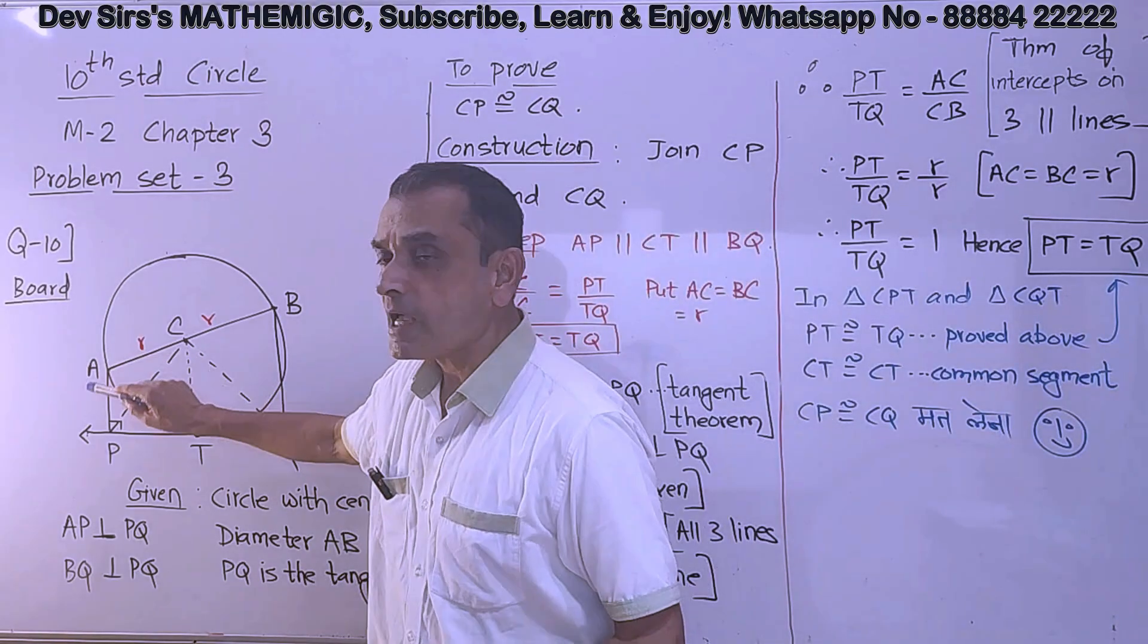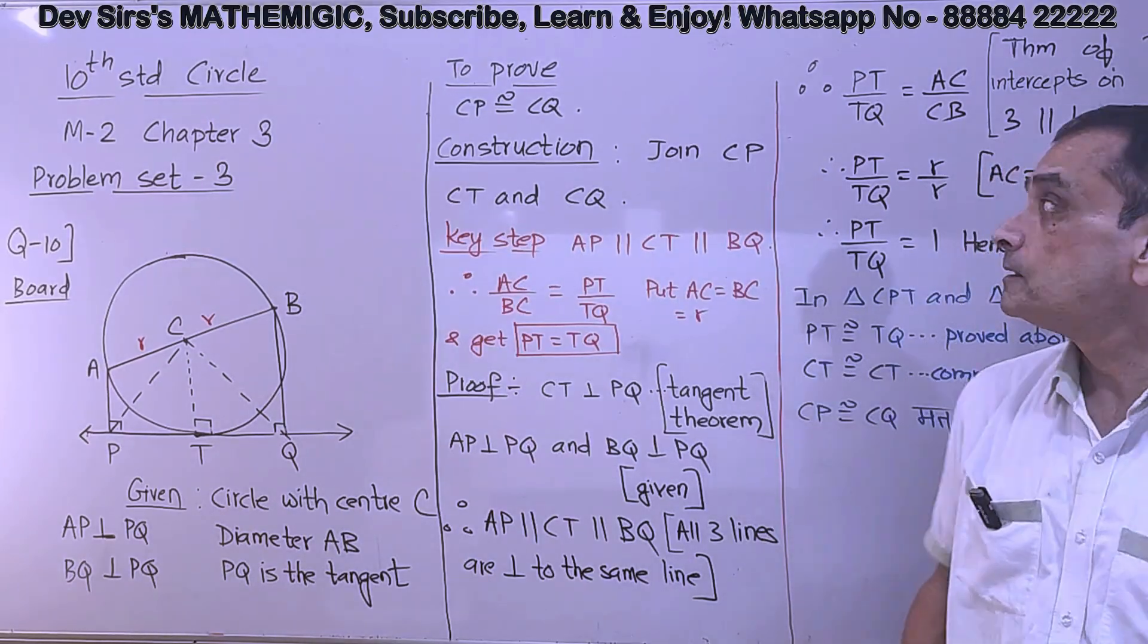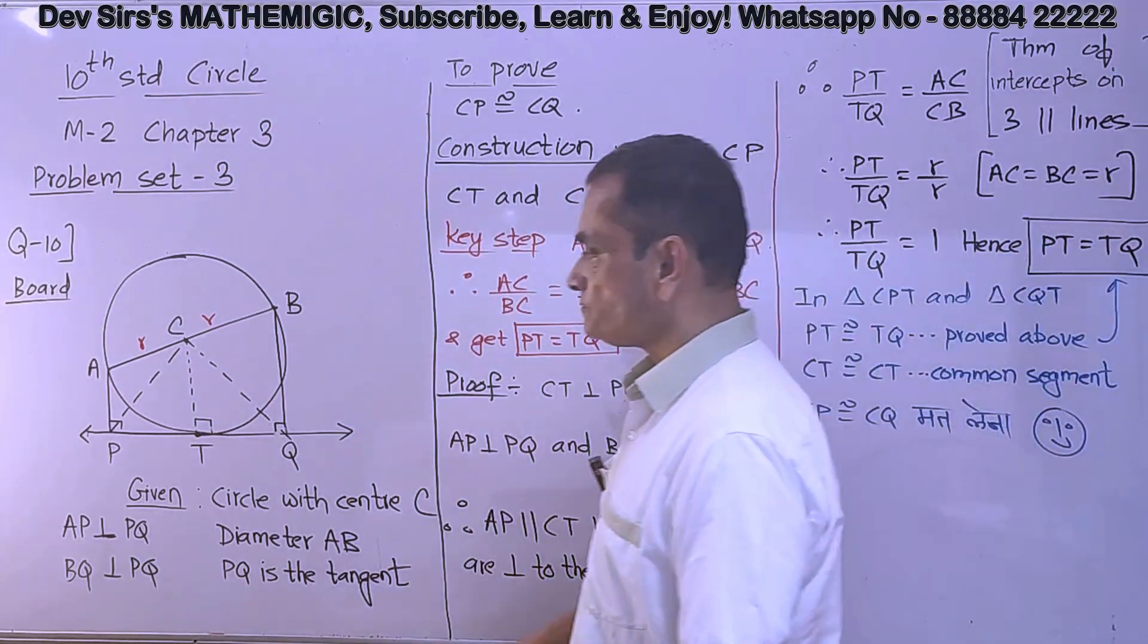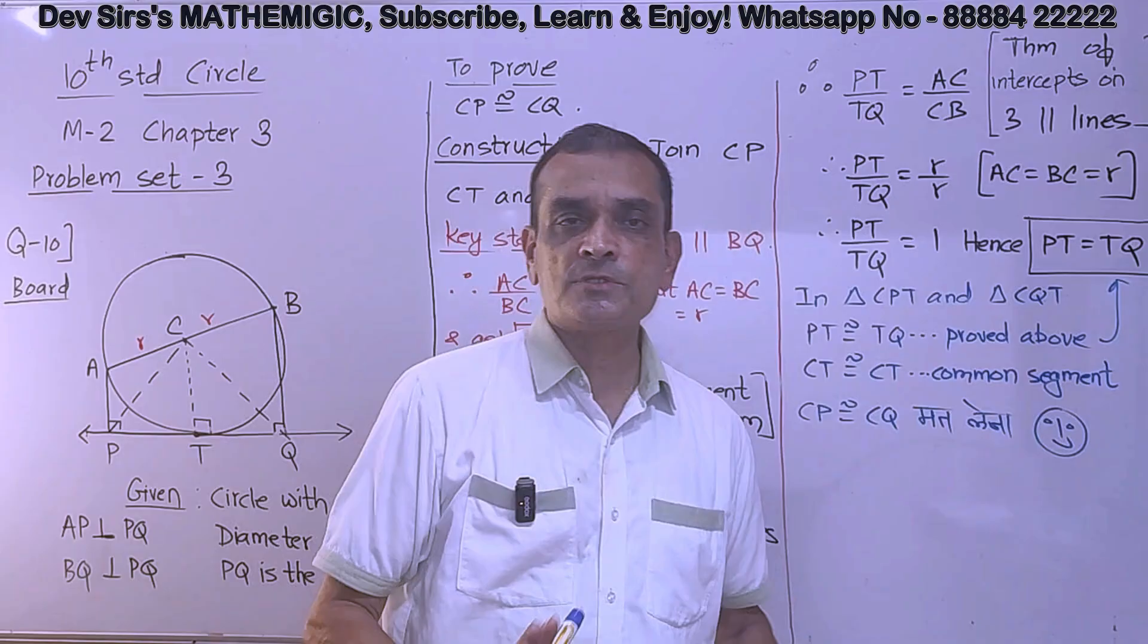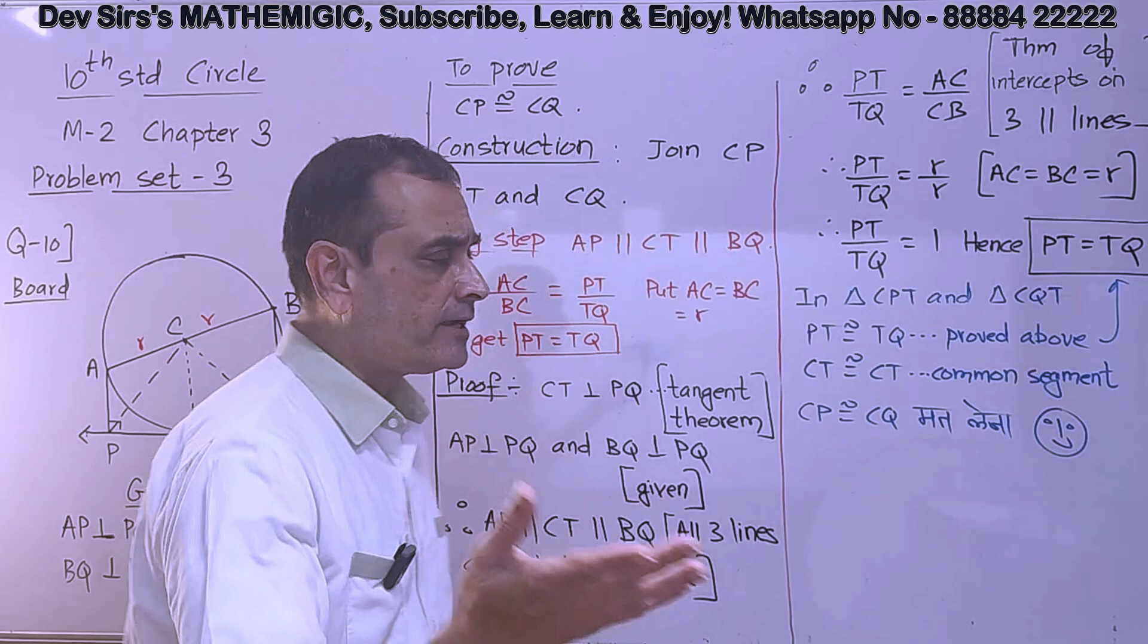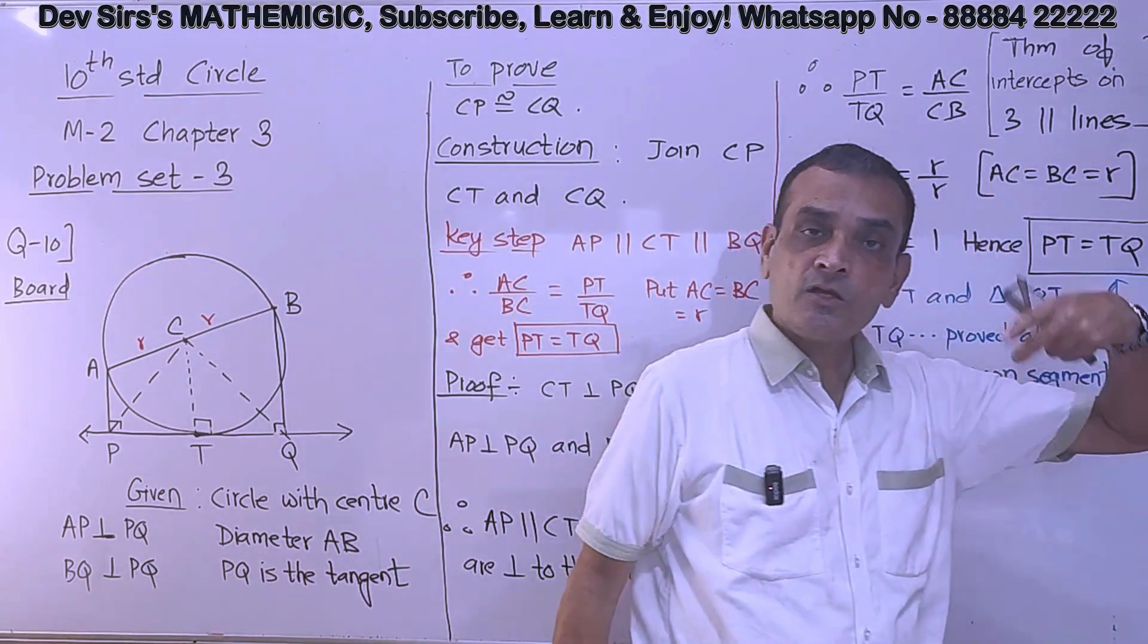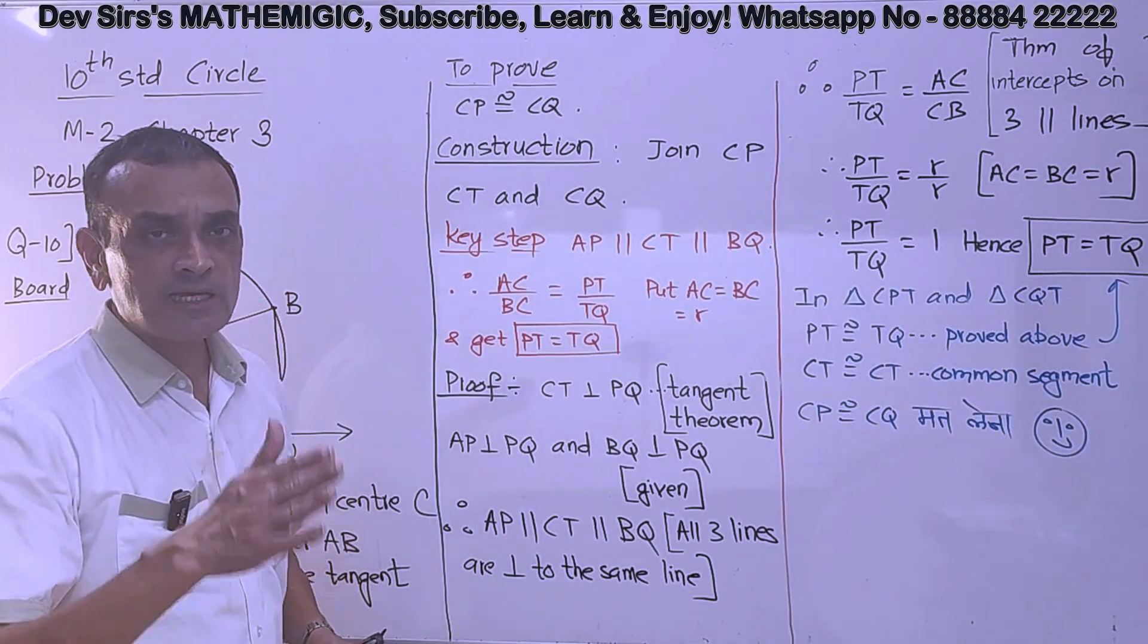Now as soon as you have shown the three lines parallel to each other, what have I said? PT upon TQ is equal to AC upon CB. Theorem of intercepts on three parallel lines, which we have proved earlier. When three lines are parallel, if you take the ratio of the intercepts, those two ratios are equal. So the intercepts, see here, AC upon CB is equal to PT upon TQ. Theorem of intercepts on three parallel lines. Which we have proved earlier. Right. So three lines are parallel. Take the ratio.